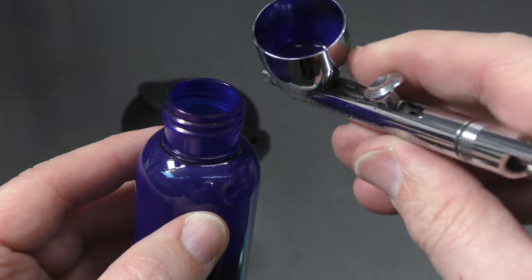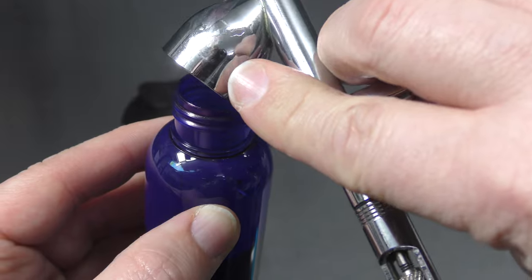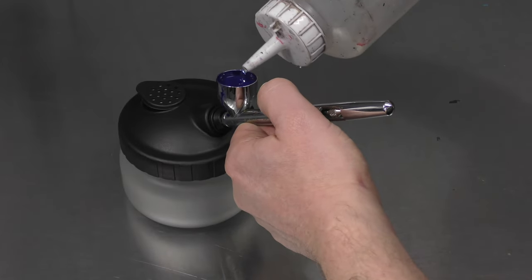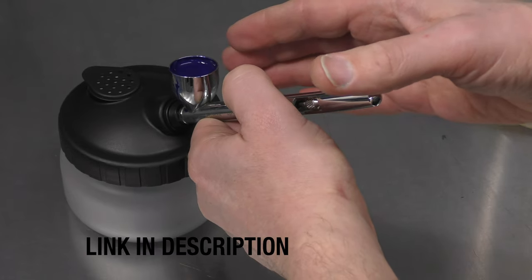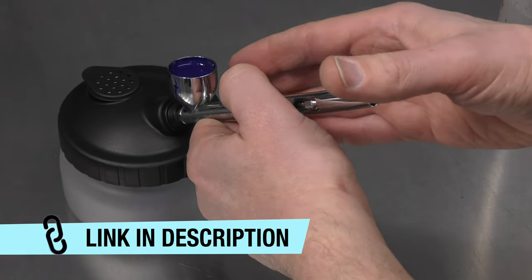First thing we need to do is clean out the airbrush. I'm just going to tip my paint back then using the cleaning station I'm just going to clean it out. I'm not going to show you the entire process. I'll link to another video that shows you how to clean your airbrush in the description below.